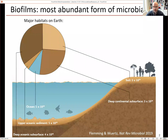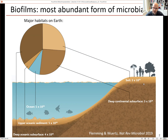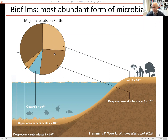Biofilms are highly abundant on our planet. A recent review by Hans-Curt Flemming and Stefan Wuertz took a census of microbial life on Earth and categorized it into five habitats: different layers of terrestrial soil, the deep continental subsurface, and the ocean with its sediment layers. In all these terrestrial environments, bacteria and archaea are primarily living associated with a surface and enclosed by a matrix — satisfying the definition of a biofilm. Biofilm seems to be the most abundant form of life in these major habitats.